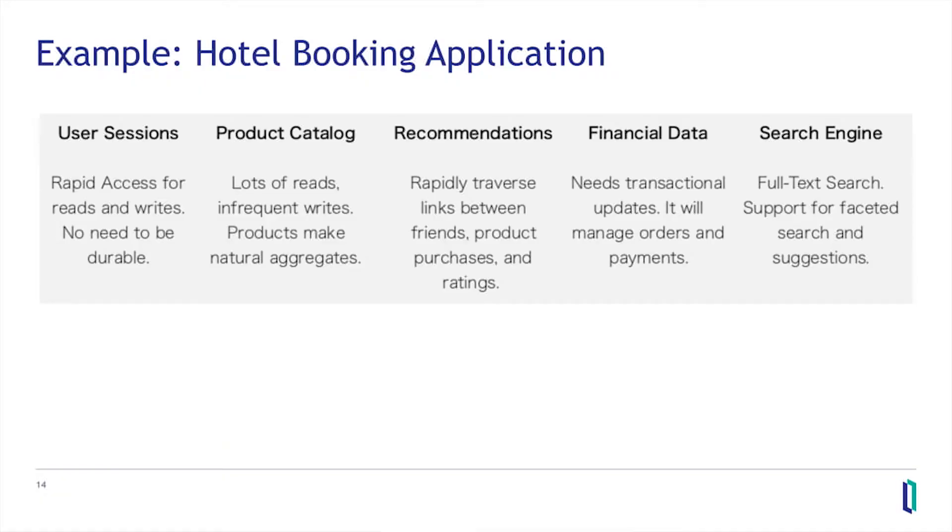Even within that web application, in addition to the BI or presentation layer and the application user interface layer, at the data layer there are at least five different kinds of things you want to do with data that have a natural model. Recommendations, for example, are naturally a fuzzy concept where you're doing matching — that naturally belongs in a graph database.